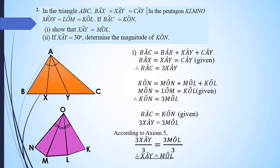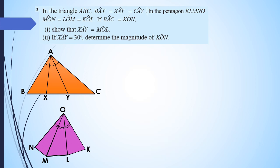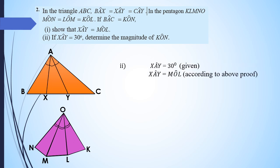For the second part, if angle XAY equals 30 degrees, determine the magnitude of angle KON. From the proof above, angle XAY equals angle MOL, so angle MOL is also 30 degrees. Since angle KON equals 3 × angle MOL, substituting 30 degrees gives KON equals 90 degrees.